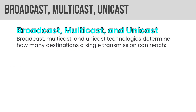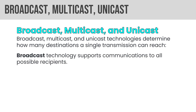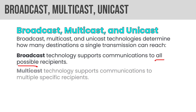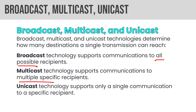Broadcast, multicast, and unicast determine how many destinations a single transmission can reach. Broadcast supports communication to all possible recipients — you'll see this in TCP/IP communication. Multicast can support communications to multiple specific recipients — I think of Windows OS deployments where you multicast to deploy to multiple endpoints at once. Multicast means multiple but not all. Unicast means a single communication to a specific recipient. So unicast is one, multicast is many, broadcast is all.